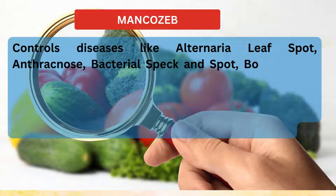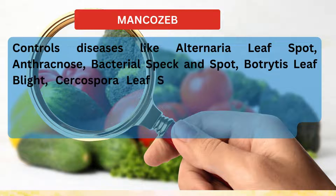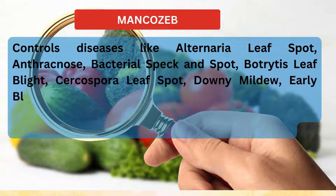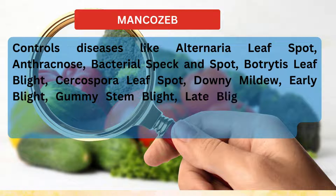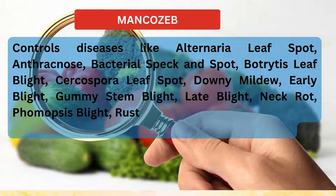Diseases controlled include anthracnose, bacterial speck and spot, botrytis leaf blight, cercospora leaf spot, downy mildew, early blight, gummy stem blight, late blight, neck rot, phomopsis blight, rust, and scab in tomatoes.